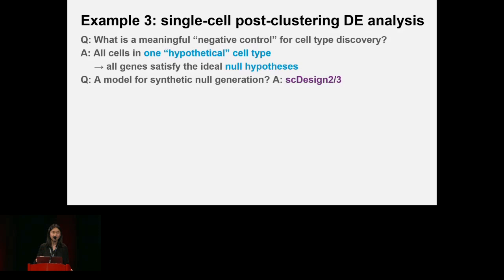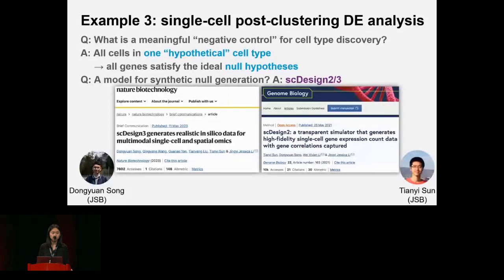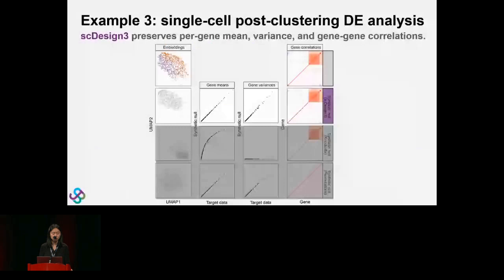Synthetic null generation helps: if we have a null model and a way to generate synthetic null data from it, we can analyze synthetic null data in parallel with real data. Our work scDesign2 and the latest version scDesign3 can help with data generation. For this one-cell-type scenario, scDesign3 is equivalent to scDesign2, though scDesign3 has more functionalities. These works were led by my students Tianyi and Dongyuan. I will talk about scDesign3 on behalf of Dongyuan, who cannot come due to a visa issue.